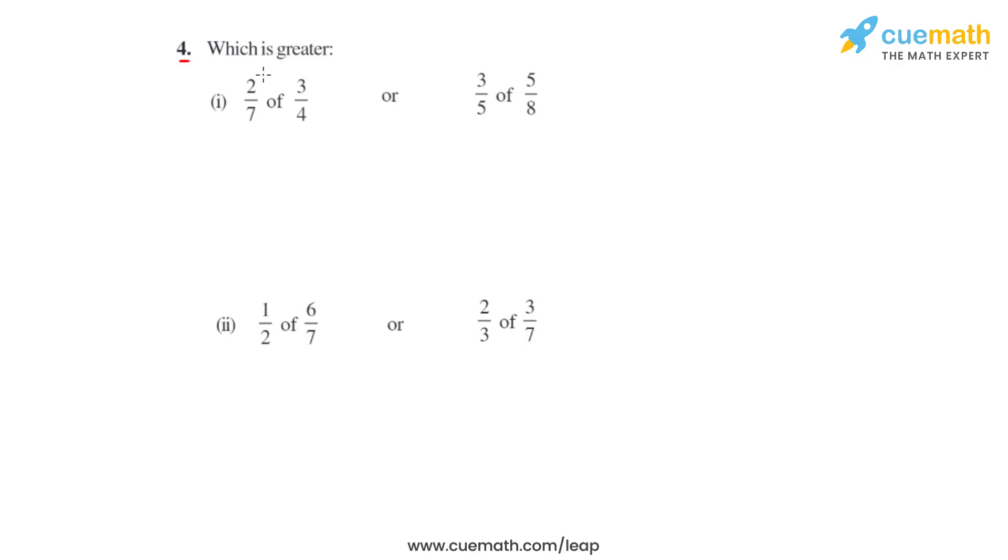Question number four asks us to find which is greater. We've got two parts in this question. Before we find out which is greater and which is smaller, we'll first have to simplify them and then see if the fractions are like or unlike fractions. If they are unlike fractions, our objective would be to convert them into like fractions so that we can directly compare the numerators and find out which is greater.